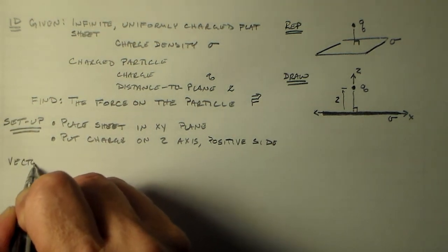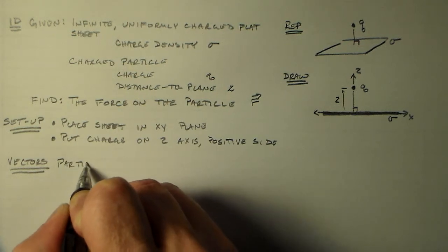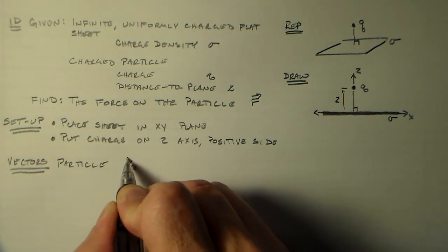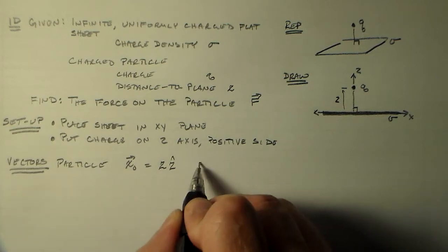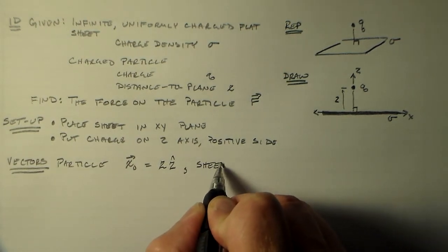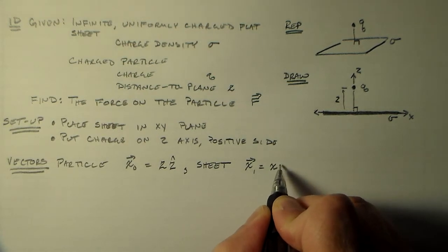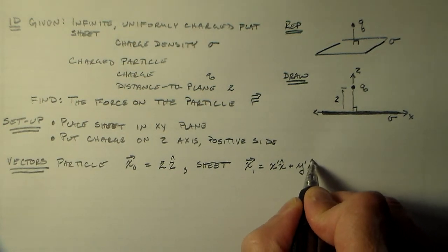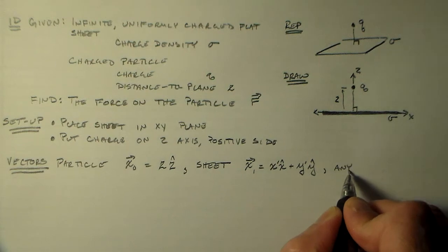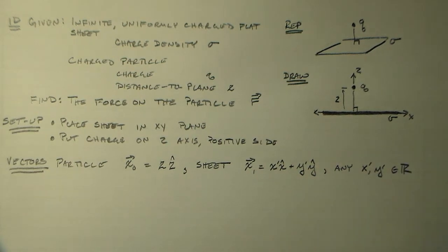And that, along with this information here, really does define the problem completely. So our vectors are, for the particle, X_0 equals Z in the Z hat direction. And for our sheet, X_1 equals X prime in the X hat direction, although let's call it X prime, plus Y prime in the Y hat direction, for any X prime or Y prime in the real numbers.